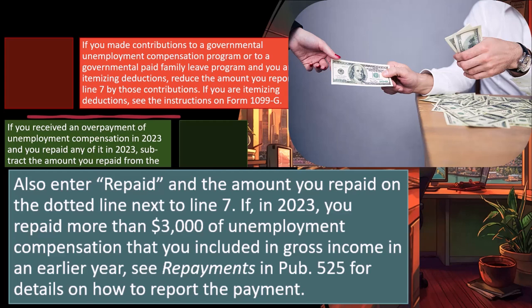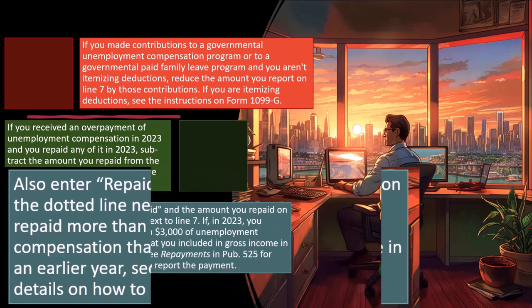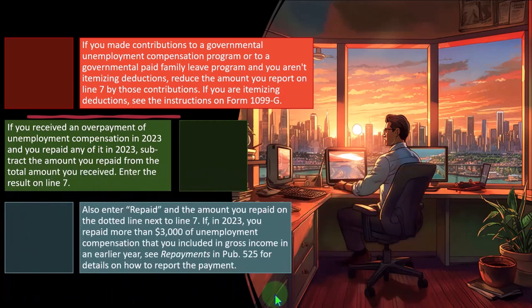If in 2023 you repaid more than $3,000 of unemployment compensation that you included in gross income in an earlier year, see 'Repayments' in Publication 525 for details on how to report that payment.